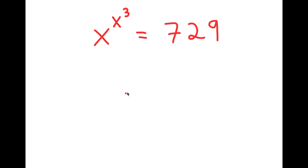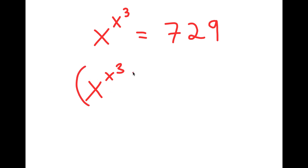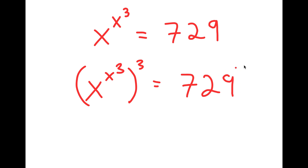To solve this, what I'm first going to do is take the power of 3 on both sides. So I get x to the power of x to the power of 3, to the power of 3, is equal to 729 to the power of 3.